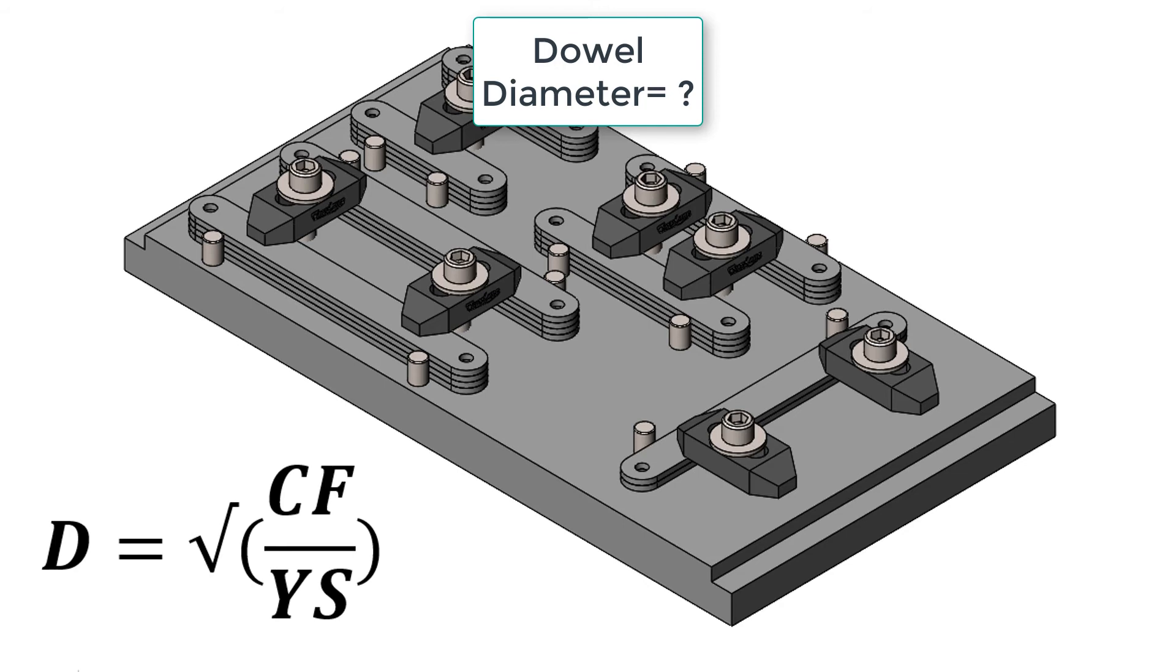We must also keep in mind that the plate must be at least two times the dowel diameter thick for this to be functional.